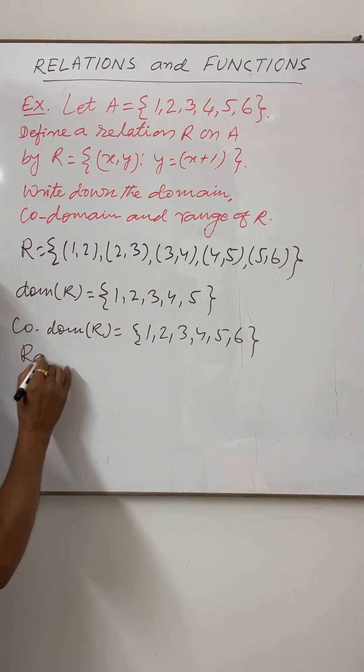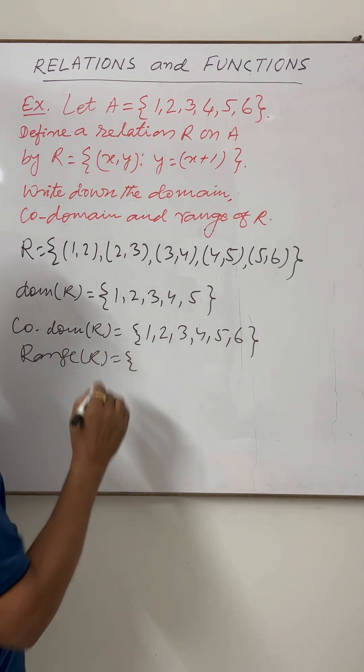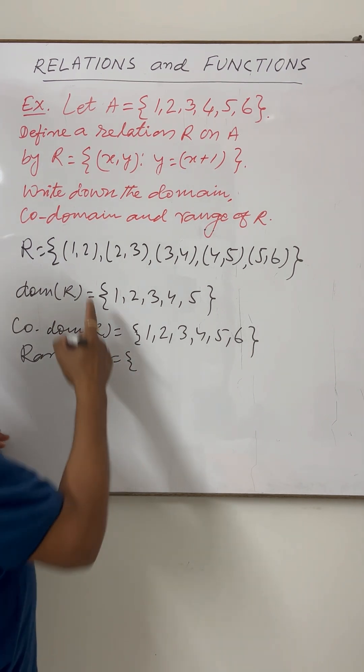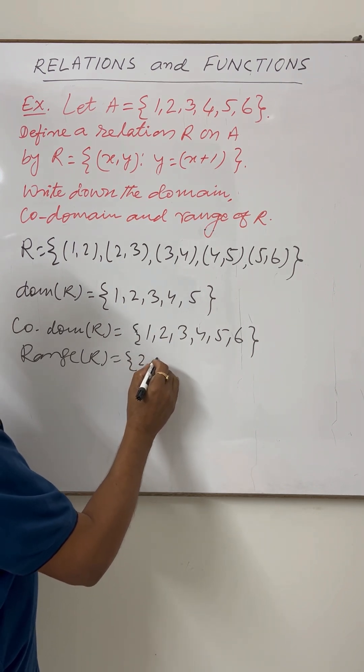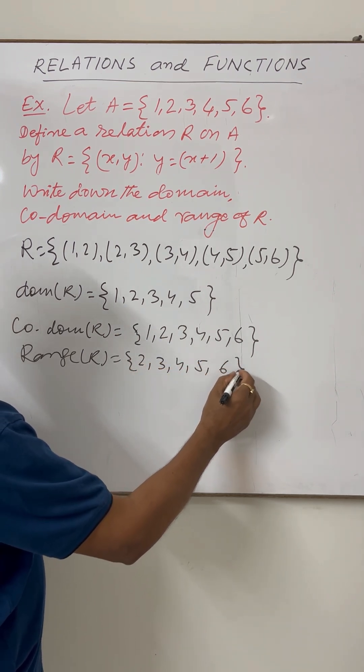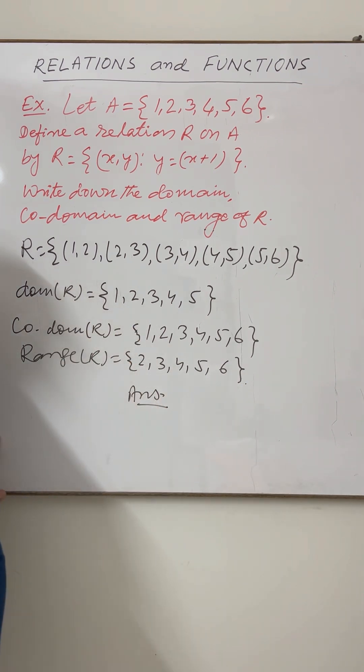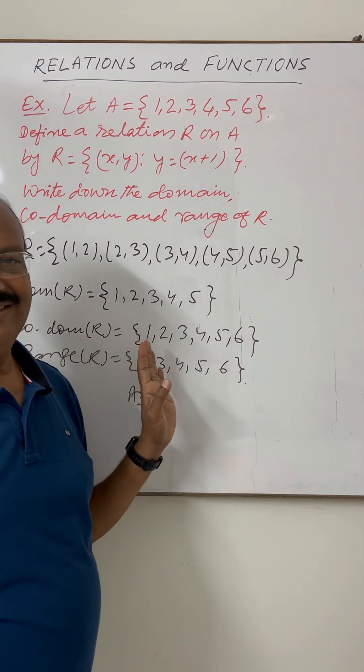And the range of this relation R, this is a set consisting of second elements of these ordered pairs. This is 2, 3, 4, 5 and 6. So this is the answer. Solution is very interesting, very important.